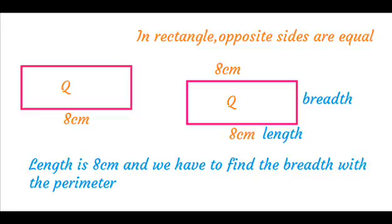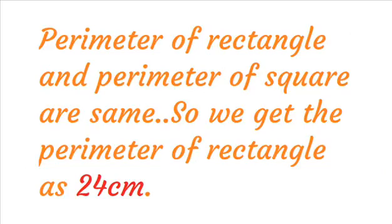Length is 8 cm and we have to find the breadth using the perimeter. Perimeter of rectangle and perimeter of square are the same. So the perimeter of the rectangle is 24 cm.